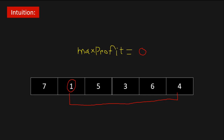Here we see 1 is less than 7, so we can't make a profit. Then the next element is 5, and the previous element is 1. The previous price is less than the current price, so we buy at 1 and sell at 5, giving us a profit of 4. We add that to max profit: 0 plus 4 equals 4. Then the current element is 3 and the previous is 5 — current is less than previous, so we skip. Next element is 6, which is greater than 3, so we buy at 3 and sell at 6. Profit is 6 minus 3 equals 3, so 4 plus 3 equals 7.